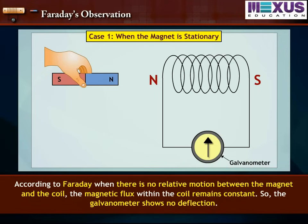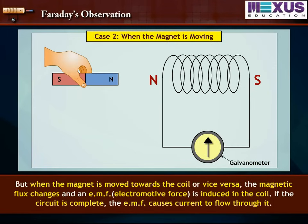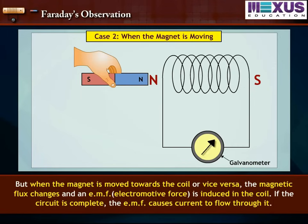According to Faraday, when there is no relative motion between the magnet and the coil, the magnetic flux within the coil remains constant, so the galvanometer shows no deflection. But when the magnet is moved towards the coil or vice versa, the magnetic flux changes and an EMF is induced in the coil. If the circuit is complete, the EMF causes current to flow through it.